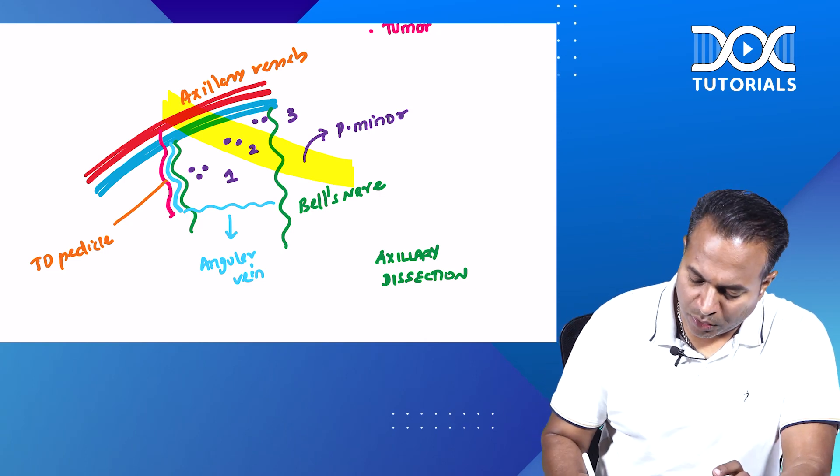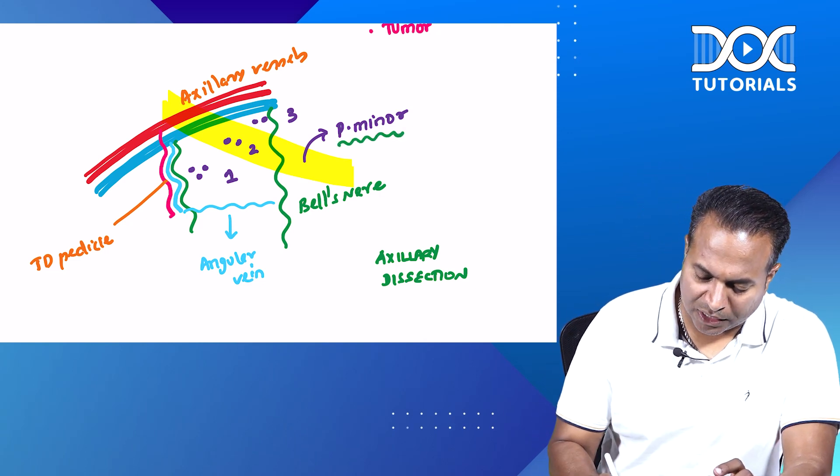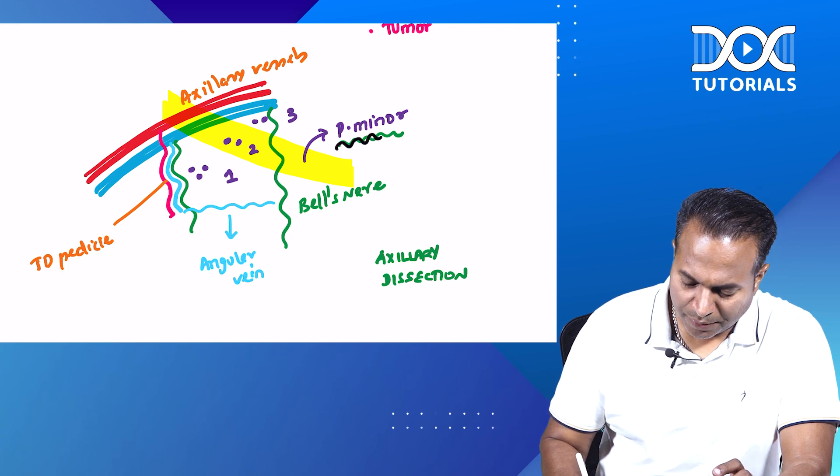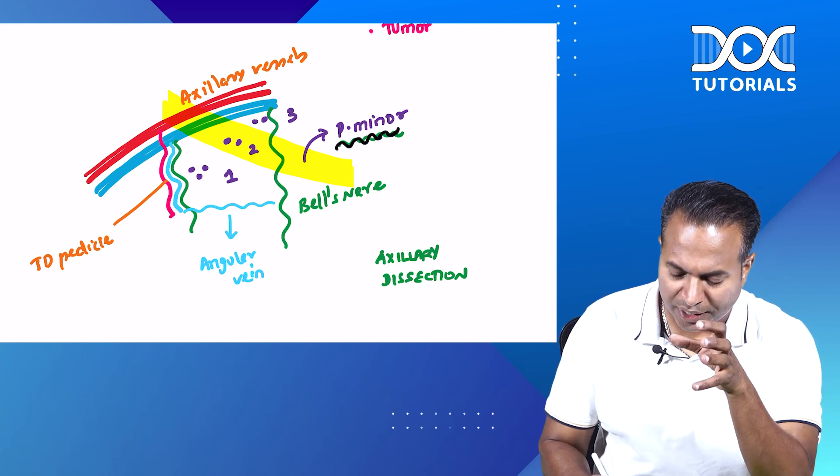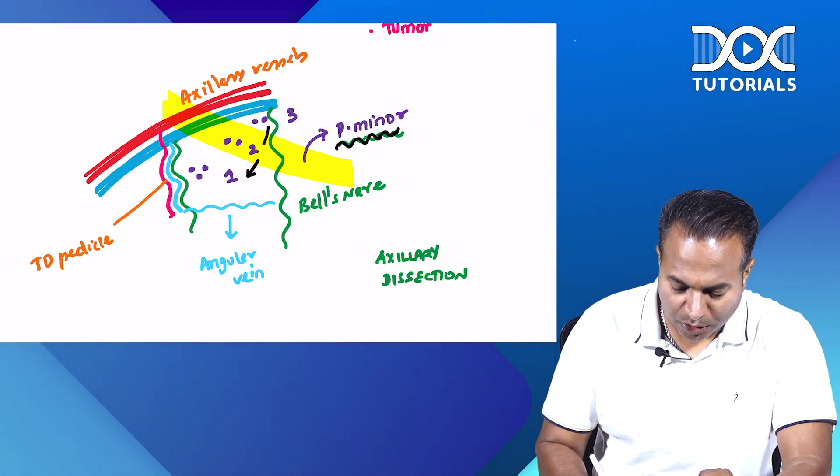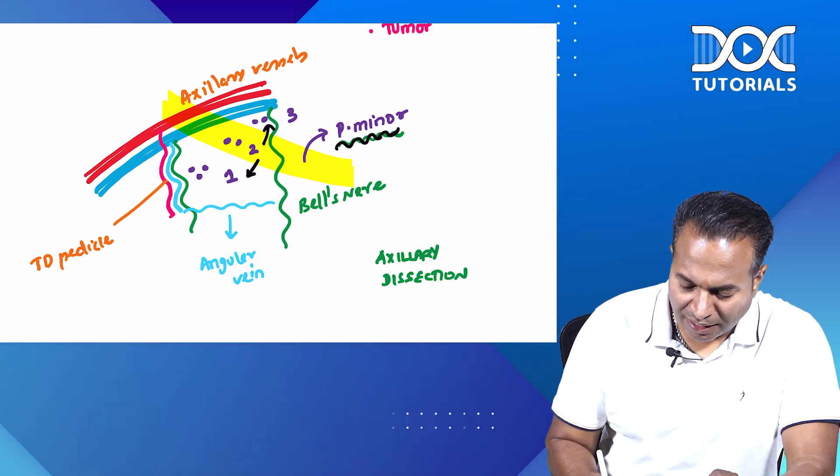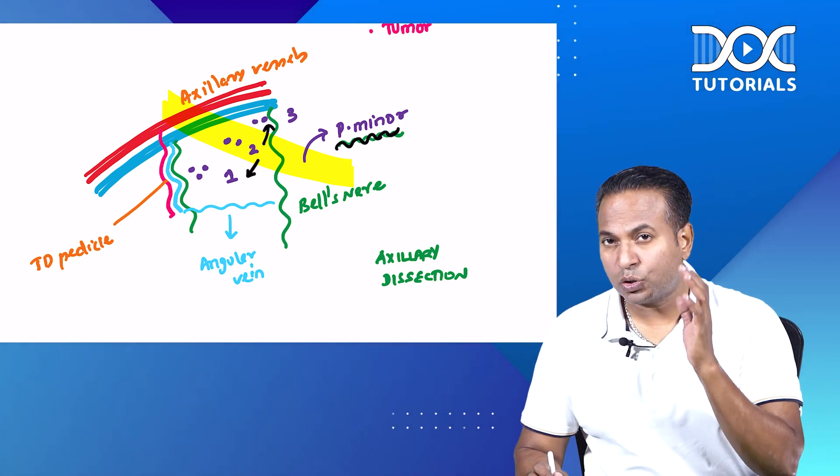What is level one node? The nodes which are lateral to the pectoralis minor shown in the image. The yellow highlighted area is the pectoralis minor. Lateral to it is level one, medial to it is level three, and at the level of pectoralis minor is level two nodes.